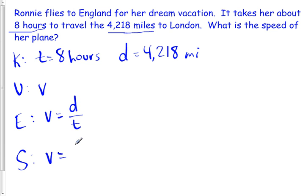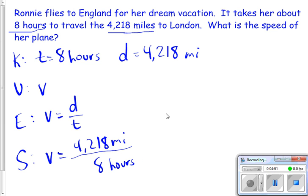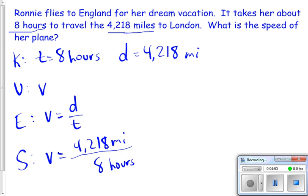Speed equals 4,218 miles divided by eight hours. So, we plug that in our calculator, which I had to go find just now. And once we plug that in, we get 527.25.